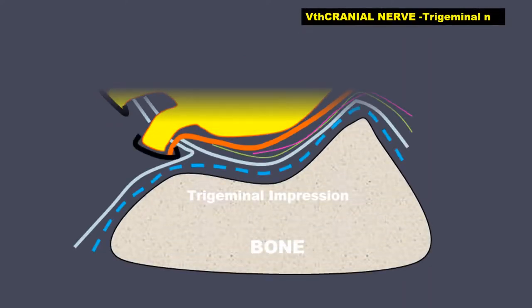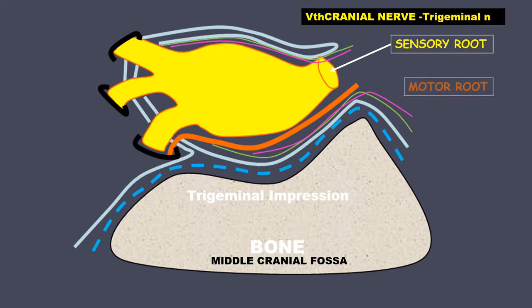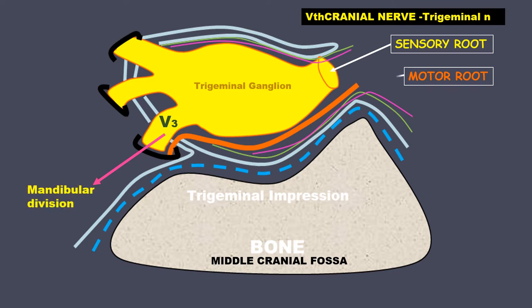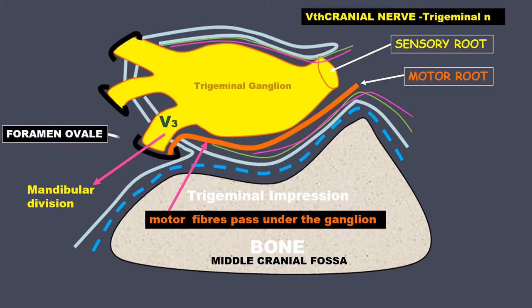The fifth cranial nerve is the trigeminal nerve. It is present inside our skull in the middle cranial fossa. It has two roots: a sensory root and a motor root. The sensory root forms the trigeminal ganglion, which is a collection of nerve cell bodies. Their axons group to form the third division, which is the mandibular division. The motor root passes under the ganglion and meets the mandibular division, and both together come out of the middle cranial fossa through the foramen ovale.